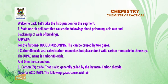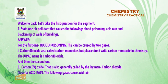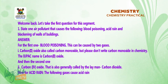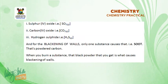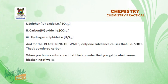The second gas that causes blood poisoning is carbon(IV) oxide. For acid rain, the following gases cause it: sulfur(IV) oxide — that is SO₂; carbon(IV) oxide — that is CO₂; and hydrogen sulfide gas — that is H₂S. And for the blackening of walls, only one substance causes that — soot, which is powdered carbon. When you burn a substance, that black powder is what causes blackening of walls.